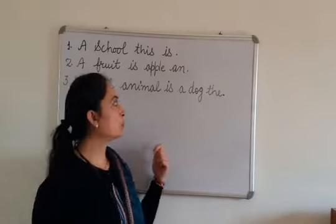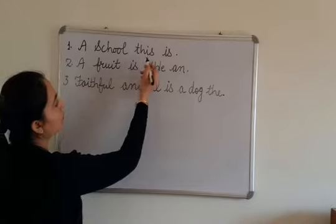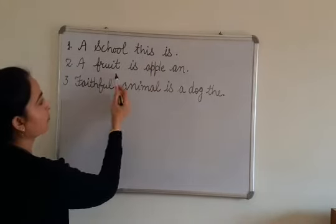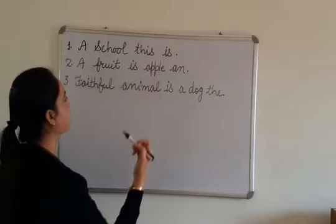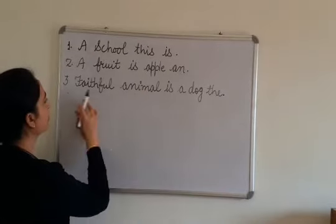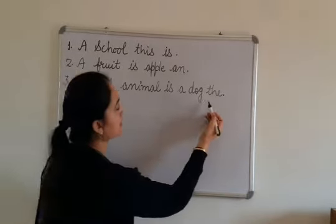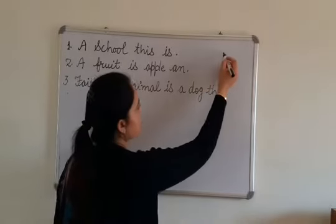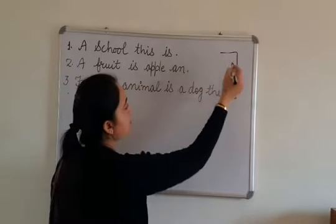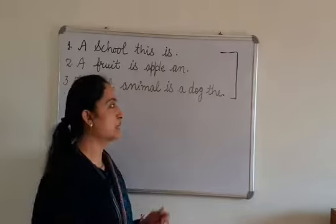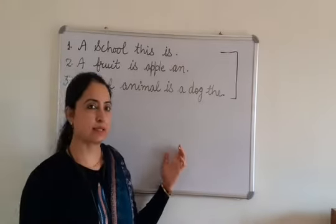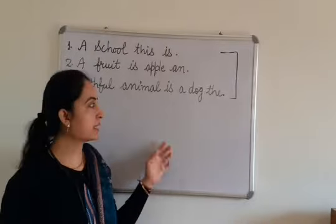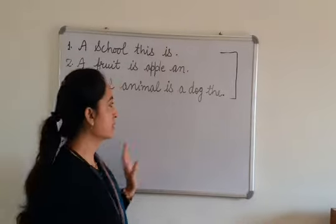See on the board. Number two: a fruit is apple. Number three: fruitful animal is a dog. These groups of words don't make any sense. These are called jumbled words. These are not sentences.